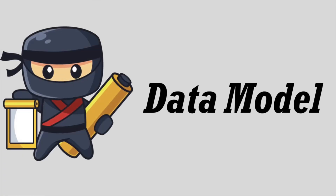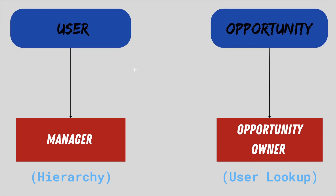Before diving into the coding part, we will first understand the data model for today's scenario. We are going to use two objects. First is the user object. On the user object, we have a field called manager, which is of hierarchy type. This is a unique lookup relationship field present only on the user object. It provides a way to define and maintain relationships between users without the need of an additional lookup field — basically, you use this field to store a user's manager.